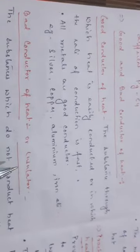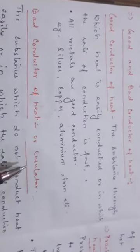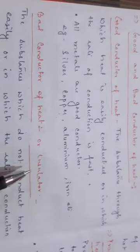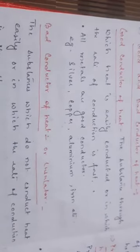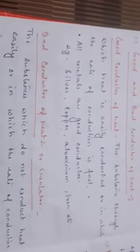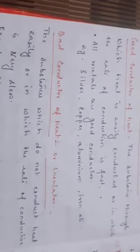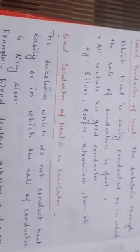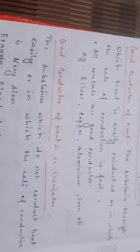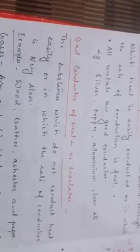We are going to read about good and bad conductors of heat. Good conductors of heat are those materials which allow the heat to pass through them quickly. Metals are good conductors of heat, like silver, copper, aluminum, iron, and many alloys like brass and stainless steel.